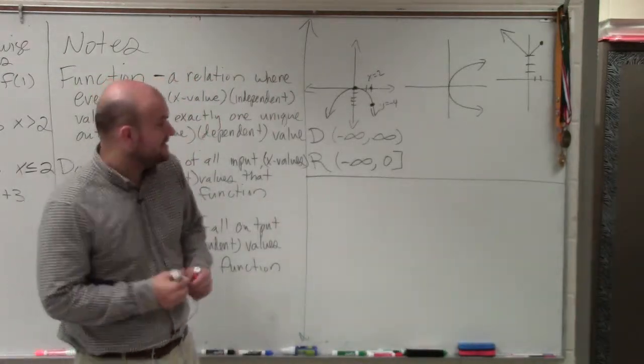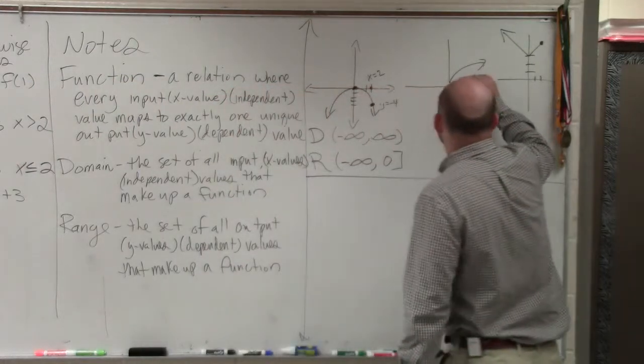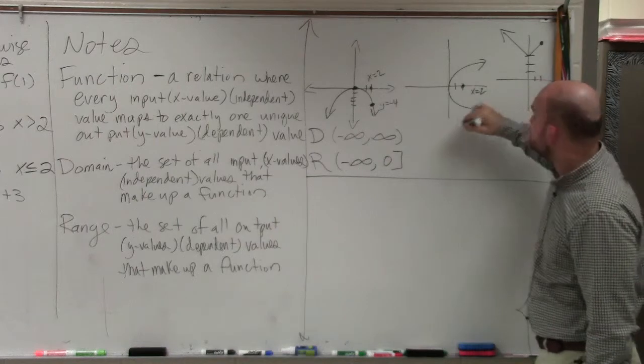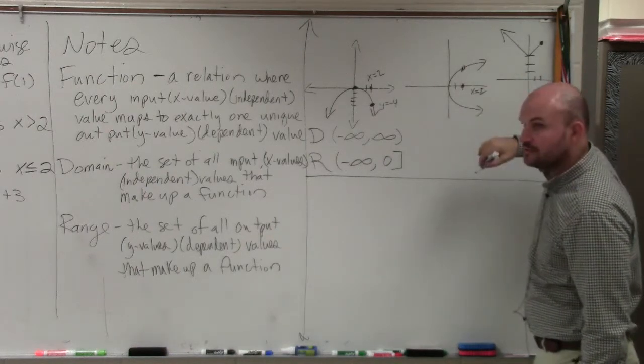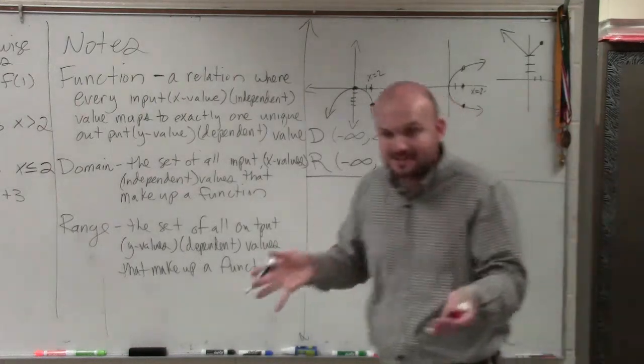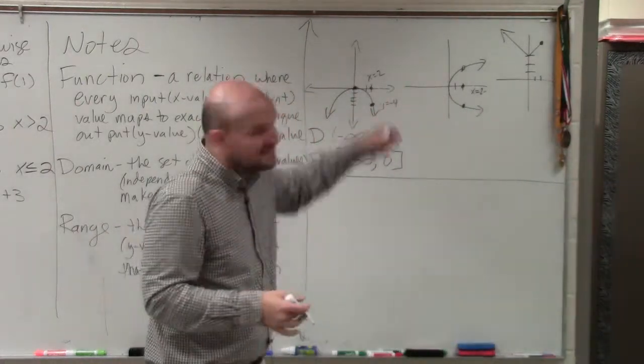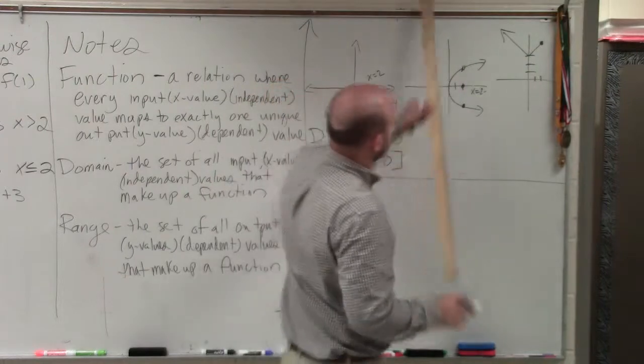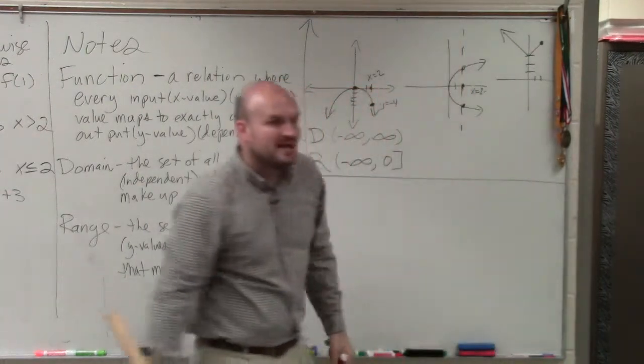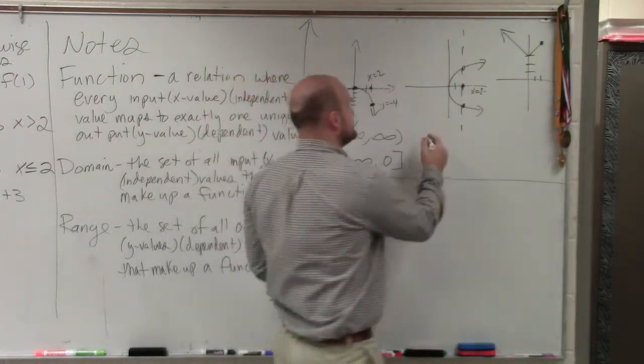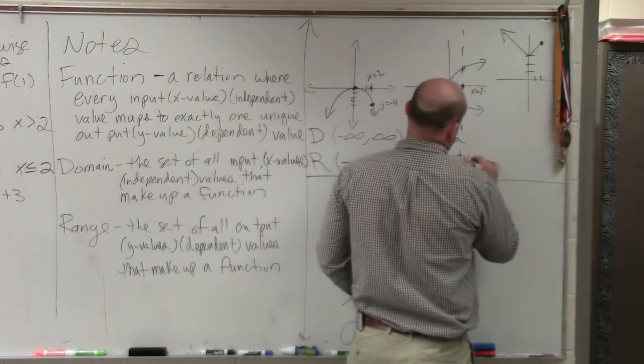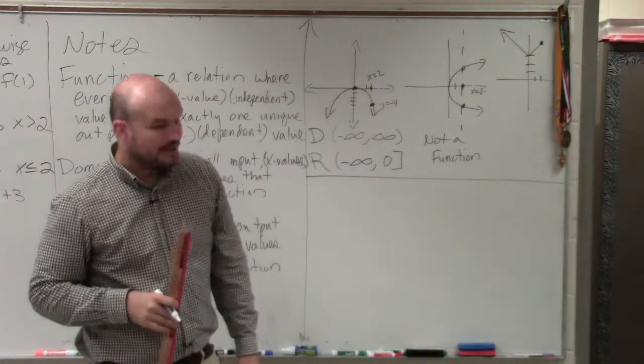For the next one, you guys can see that, let's go and look at x equals 2 again. At x equals 2, we have an issue. We have a positive value where y is positive, and we have a negative. We have two points when x equals 2. So therefore, this is not a function. You can also see that it does not pass the vertical line test. So this is not a function.